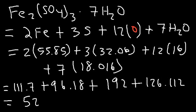And you should get 525.992 grams per mole. So that's it. Now you know how to calculate the molar mass of ionic and molecular compounds. So thanks for watching.